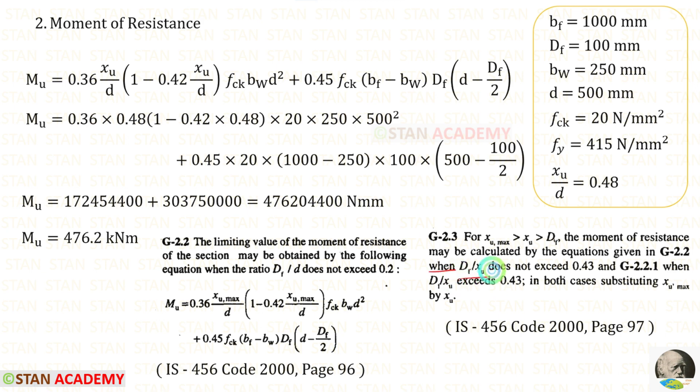When DF upon XU does not exceed 0.43, we need to use the equation given in G-2.2. That is this one. Instead of XU max, we have to apply XU. But here, both of them are same. After applying all of the values for MU, we will get 476.2 kilonewton meters.